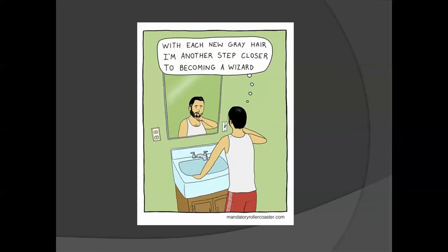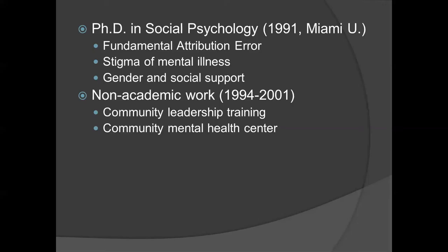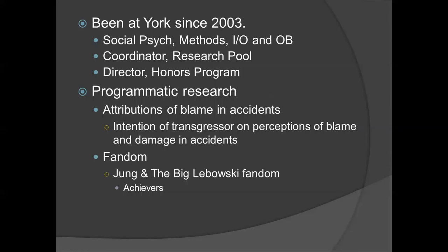By the way, when I show you pictures of myself, you can tell how recent they are depending upon how gray my beard is — I figure by now I'm about 95% wizard. So let me give you a brief introduction to myself, William Ashton. Here's me and the Hulk at Comic-Con a couple years ago. I have a PhD in social psychology; I consider myself a social psychologist. Back in grad school I did research work on the fundamental attribution error, the stigma of mental illness, and gender and social support. I have a long period of doing non-academic work in community mental health, community organizing, and community leadership training.